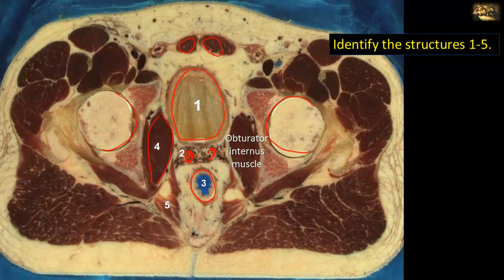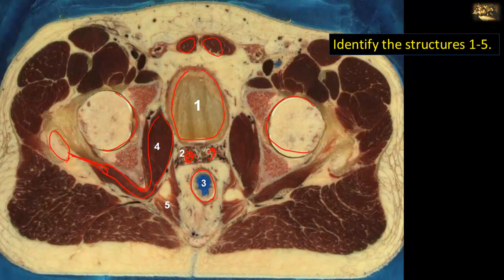The obturator internus muscle changes direction at the level of the ischial spine and attaches to the greater trochanter of the femur. The fascia of the obturator internus gives rise to some muscle fibers that constitute the levator ani muscle.